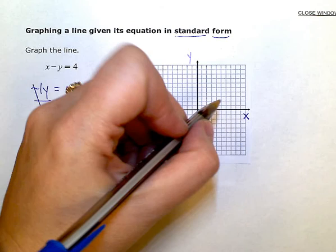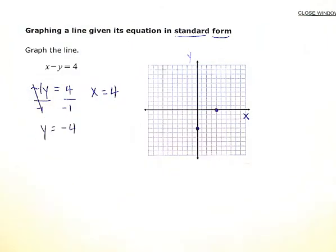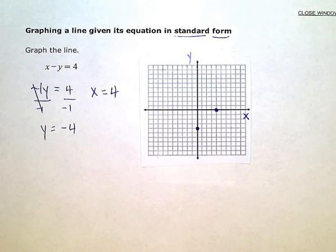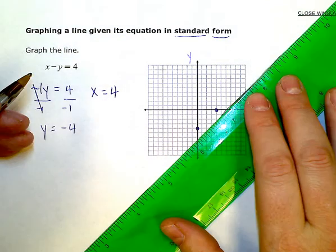So my X intercept, 1, 2, 3, 4, is at positive 4. And once I have two dots, I can go ahead and line up my ruler and draw in my line.